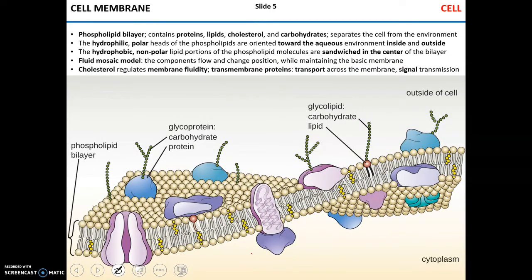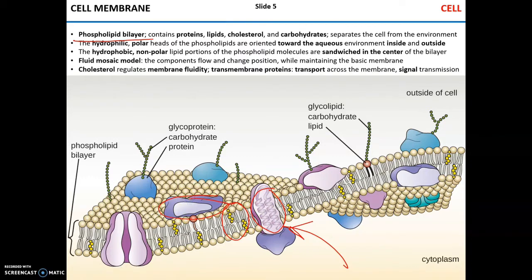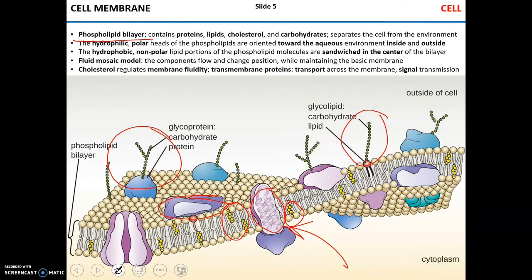Every cell is surrounded by the cell membrane, which is a phospholipid bilayer. Inside the membrane, along with the phospholipid bilayer, you can find other biological molecules such as transmembrane proteins or peripheral proteins, lipids, cholesterol, and carbohydrates that serve as modifications to the lipids or proteins in the membrane.